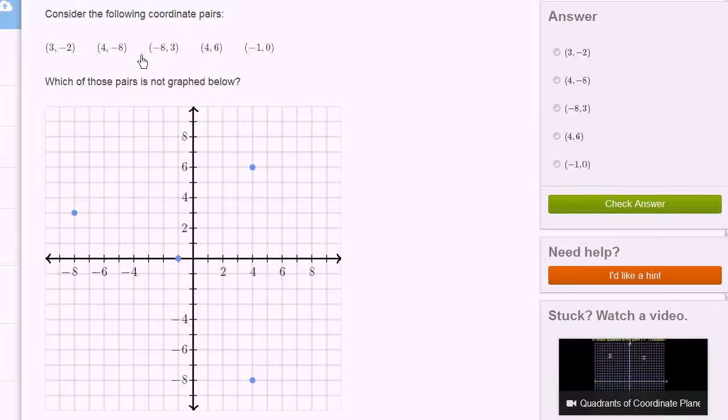Consider the following coordinate pairs. I'm going to give us a bunch right over here. Which of those pairs is not graphed below?